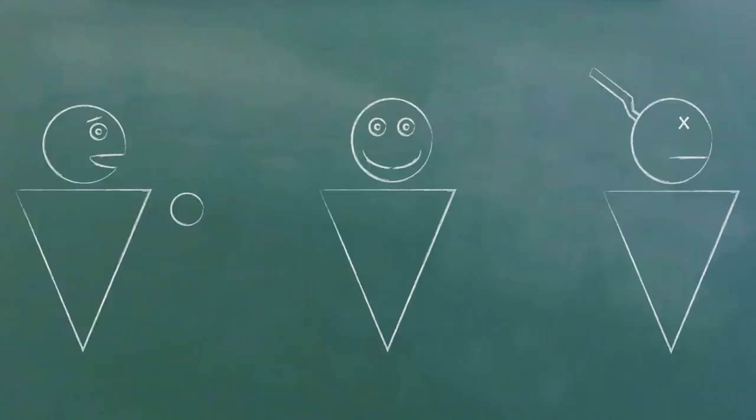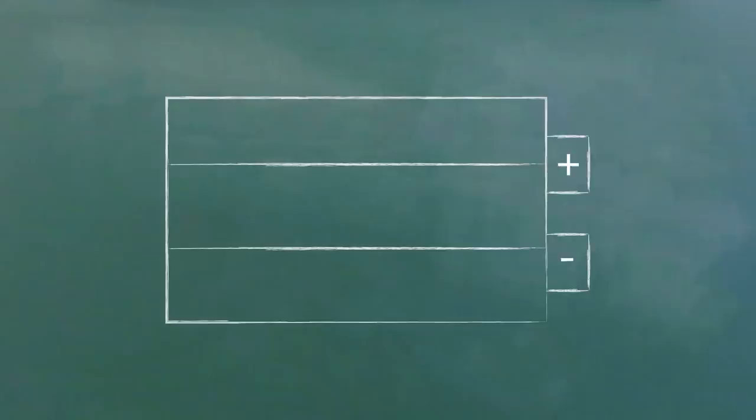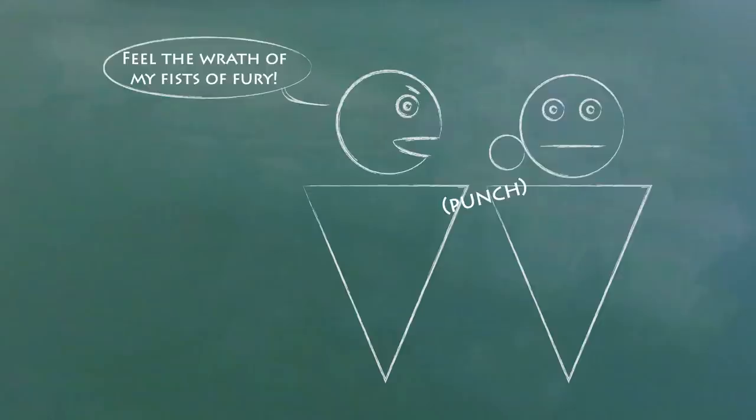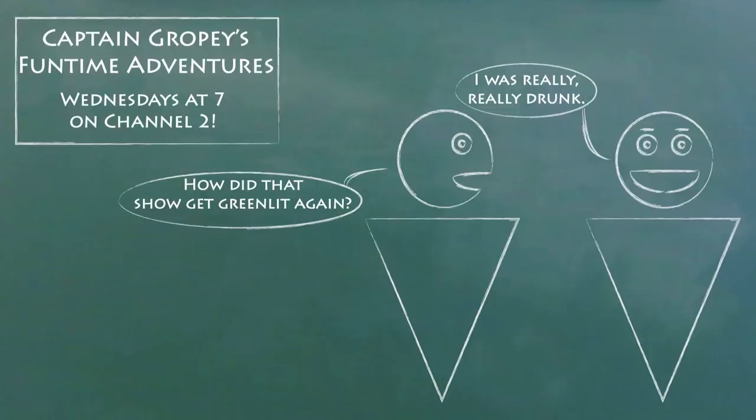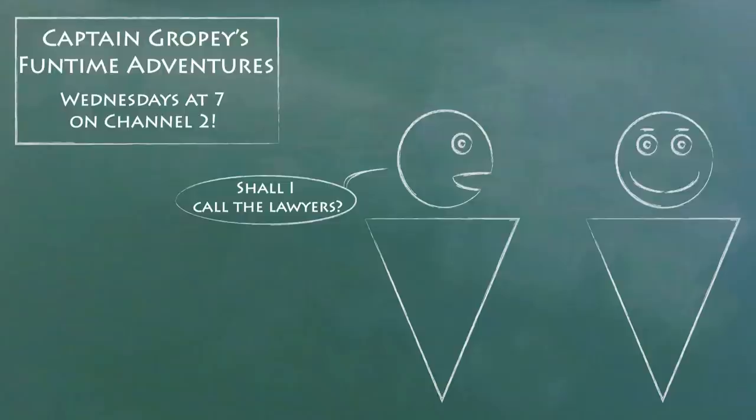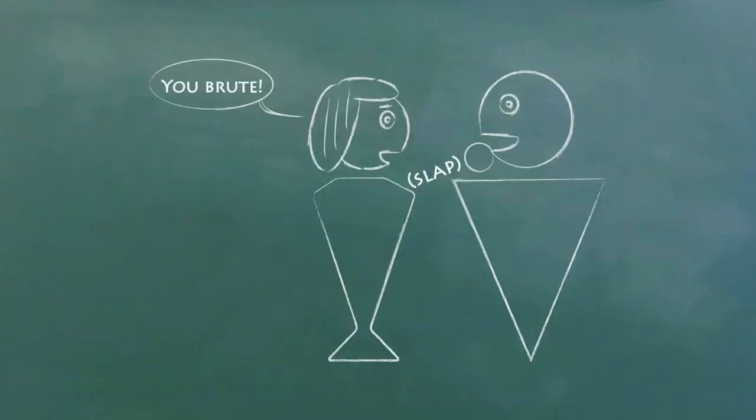So what are a few common intentional torts? First there's battery. No. Battery is the intentional infliction of harmful or offensive contact. You can't sue over ordinary and reasonable contact though, even if you personally find it offensive.